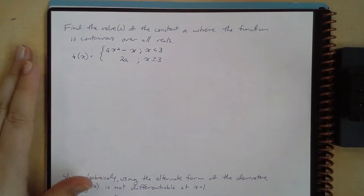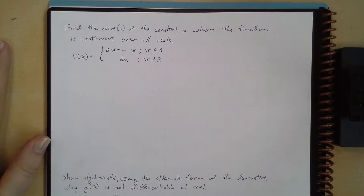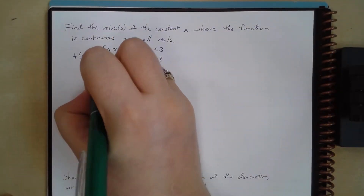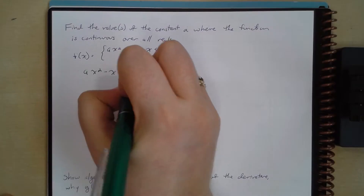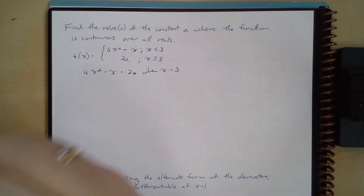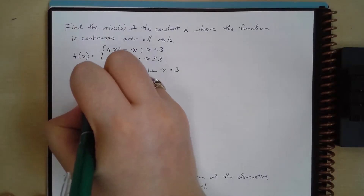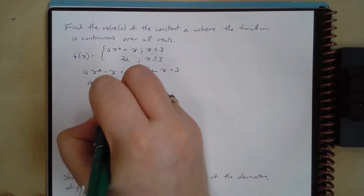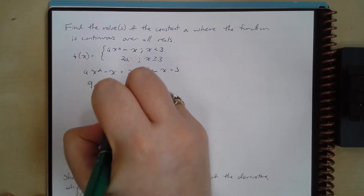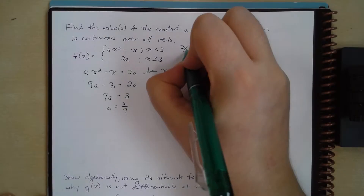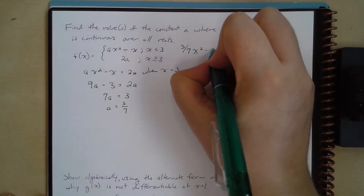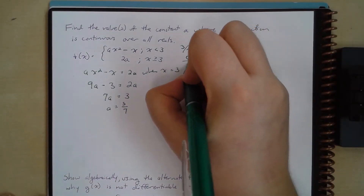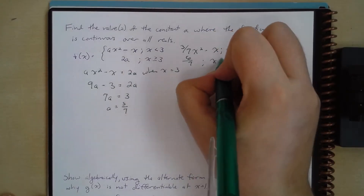We want to find all values of a constant a where the function is continuous over all the reals. We're going to set ax squared minus x equal to 2a when x equals 3. Substituting in 3, I get 9a minus 3 equals 2a. So 7a equals 3, meaning a equals 3 sevenths. Rewriting: we've got 3 sevenths x squared minus x when x is less than 3, and 6 sevenths when x is greater than or equal to 3.